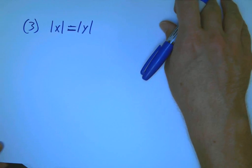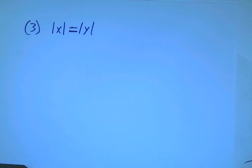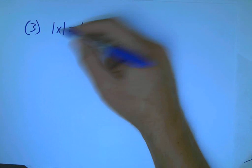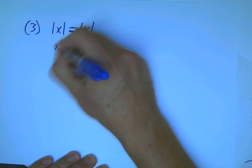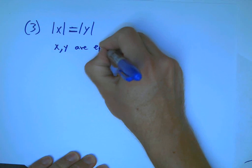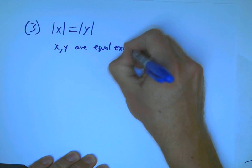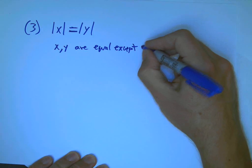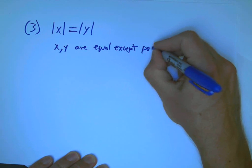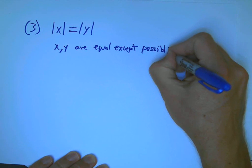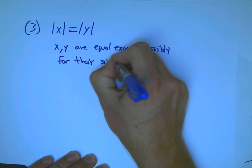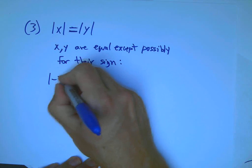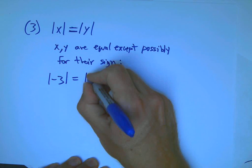What do you know about two numbers if, oops, I hope I wasn't going off the screen before. What do you know about two numbers if the absolute value of x is equal to the absolute value of y? You don't know that x and y are equal exactly.